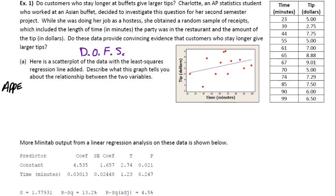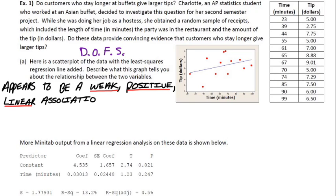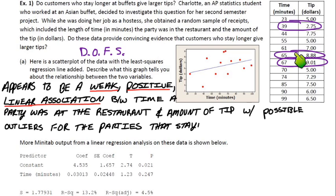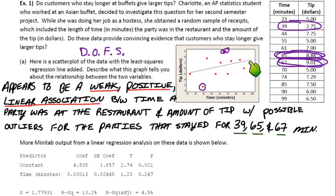So just as a reminder, when we have to describe a scatterplot, the best way to go about that to get full credit is to use the DOFs acronym: Direction, Outliers, Form, and Strength. And we can do that in one sentence. So we can say there appears to be a weak, the scatter is actually pretty weak, it's not overly linear, the direction is positive, and the form we're suggesting would be a linear association. So strength, direction, and form. And then to add context, we'd say between the time a party was at the restaurant and the amount of tip. And then we might want to point out a couple possible outliers here. For example, this party was there for 39 minutes and only tipped 275. And then we might want to mention these two dots up here. So that would be the parties that tipped or stayed for 65 minutes and 67 minutes. So it looks like those three groups might represent some outliers. In fact, if we delete those, that definitely improves our correlation.